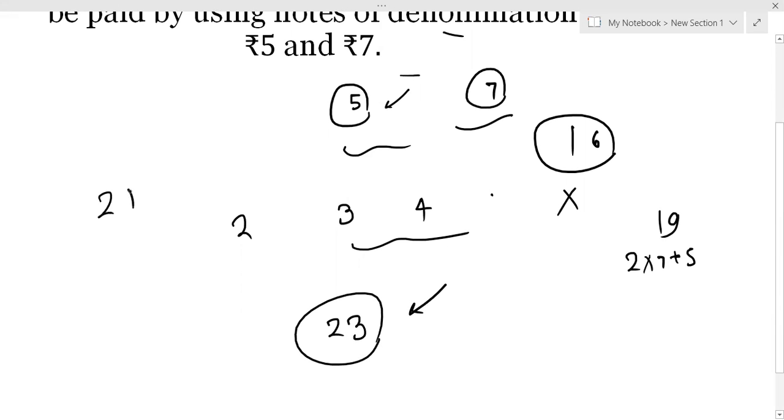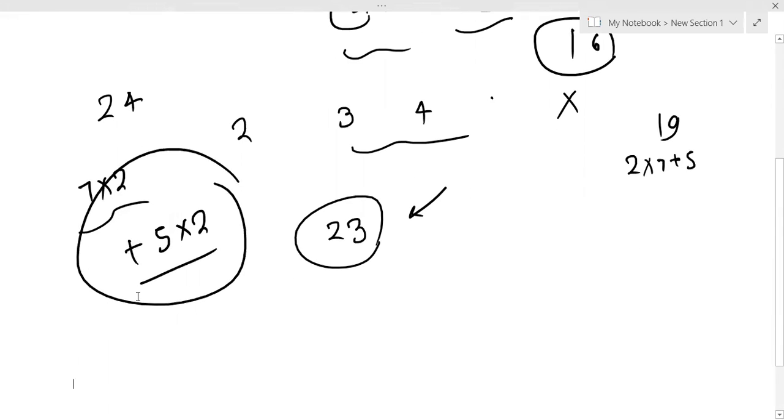If you see ₹24, how can I write ₹24? We have 7×2 plus 5×2, so two ₹7 notes and two ₹5 notes. For ₹55, we can do 5×11. For ₹99, we can do 7×7 plus 5×10, so seven ₹7 notes and ten ₹5 notes.